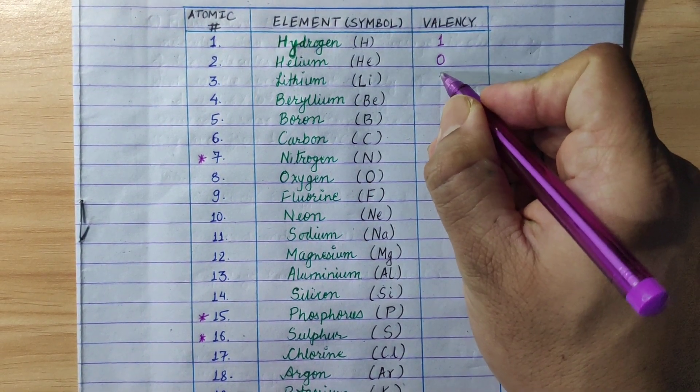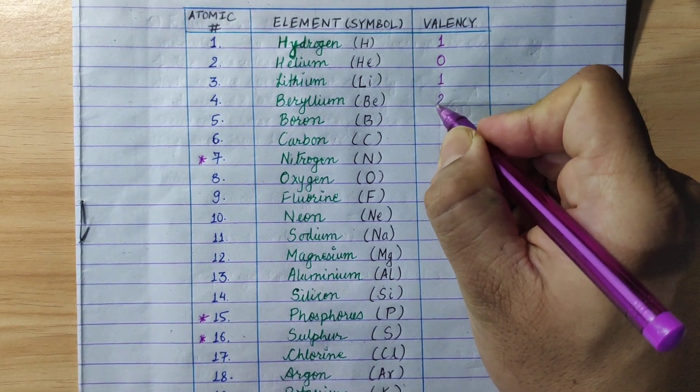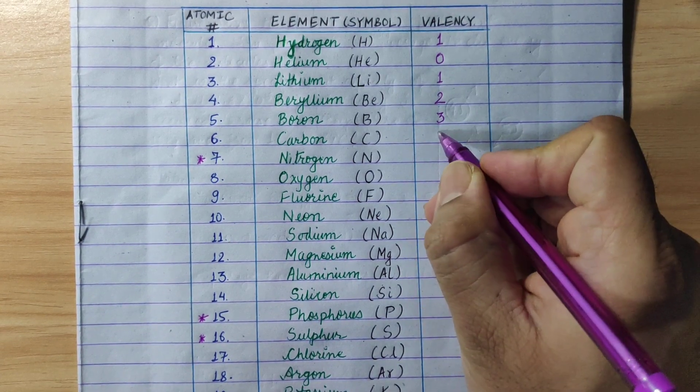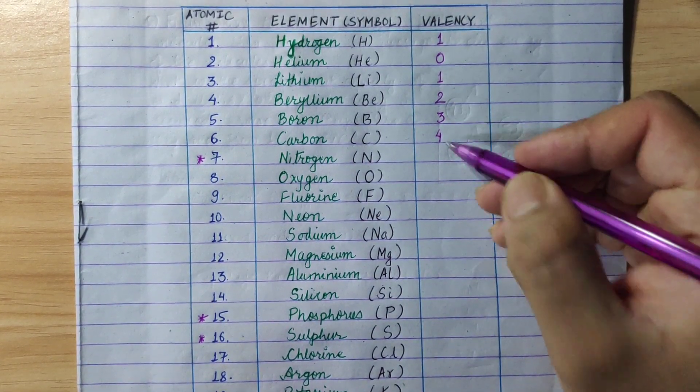Then lithium 1, beryllium 2, boron 3, carbon 4. We will do 1, 2, 3, 4.